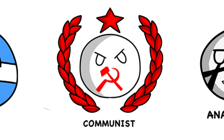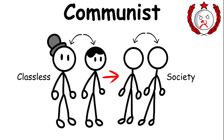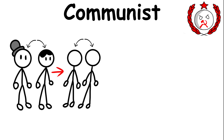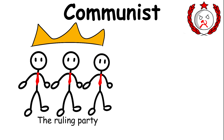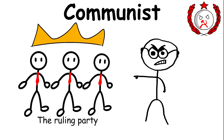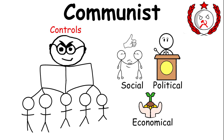A communist government believes in the concept of a classless society and aims to achieve it through the state's absolute control over the country's resources. The ruling party, often led by an authoritarian figure, controls all of the social, political, and economic decision-making in a communist nation.